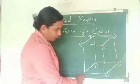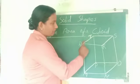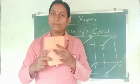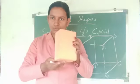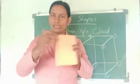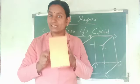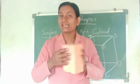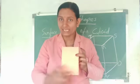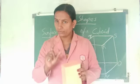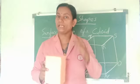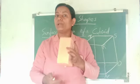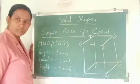Surface area of a cuboid. Consider cuboid MNOP-TQRS. A cuboid has one, two, three, four, five, six faces — there are six faces. It consists of six rectangular faces. Therefore, the surface area of a cuboid is equal to the sum of the areas of six rectangular faces.